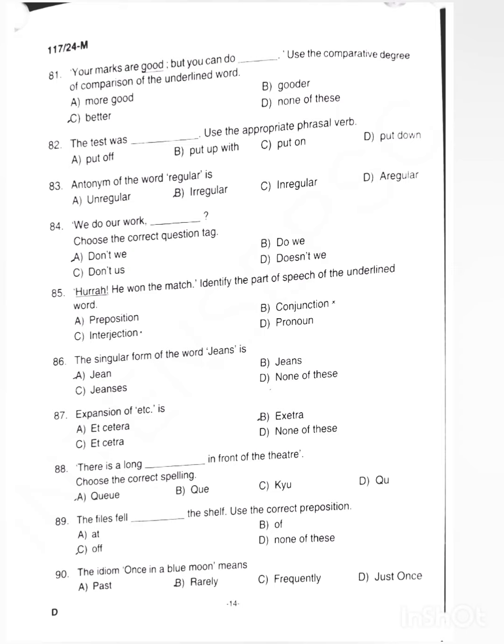Next question. We do our work. Choose the correct question tag. Option A is don't we. Here do is negative, don't we.